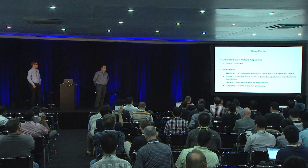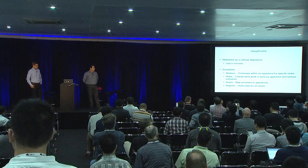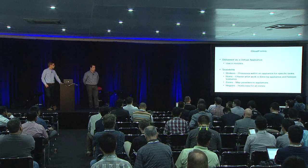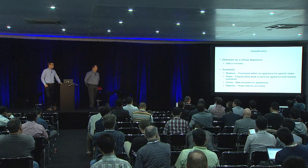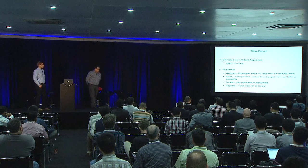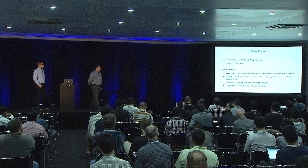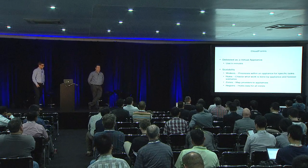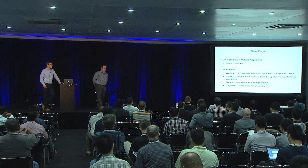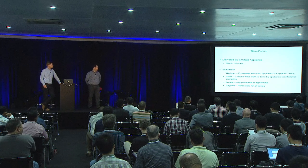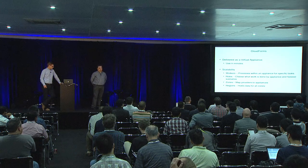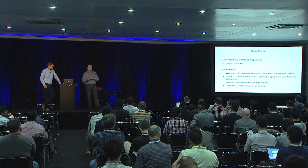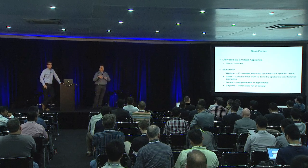We deliver CloudForms as a virtual appliance — a virtual machine — so typically people download it and they're installed minutes later. A lot of customers doing POCs are seeing value within the first one to two hours. In terms of scalability, inside the virtual appliance you can have workers — processes within the appliance. There are probably 15 to 20 different types of workers, each with its own role. Each appliance can have a role, and based on that role, workers will be started or not. You can also designate appliance roles as primary on one appliance and secondary on another, so if one goes down it fails over.